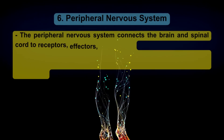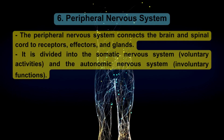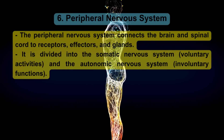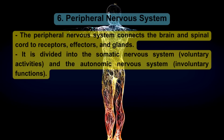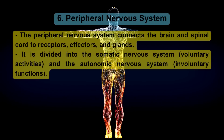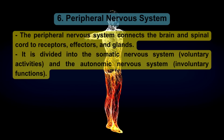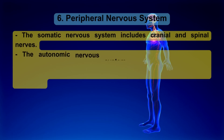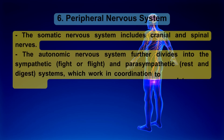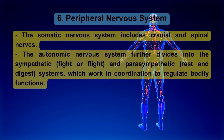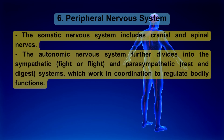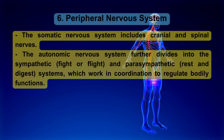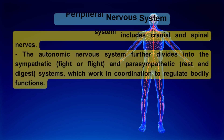The peripheral nervous system connects the brain and spinal cord to receptors, effectors, and glands. It is divided into the somatic nervous system, which governs voluntary activities, and the autonomic nervous system, which governs involuntary functions. The somatic nervous system includes cranial and spinal nerves. The autonomic nervous system further divides into the sympathetic (fight or flight) and parasympathetic (rest and digest) systems, which work in coordination to regulate bodily functions.